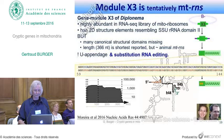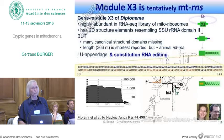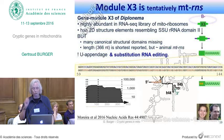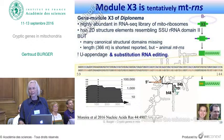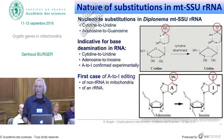Looking more carefully at this gene in the RNA-seq data, we saw that there is U appendage editing going on at the very end of the RNA molecule. But we also saw substitution editing going on: a stretch of about 90 nucleotides where every C is substituted by a U in the RNA, and half of the A's are substituted by G's in the cDNA sequence. This was the first case of substitution editing we had seen in this genome, and it makes finding genes in the genome really very hard.